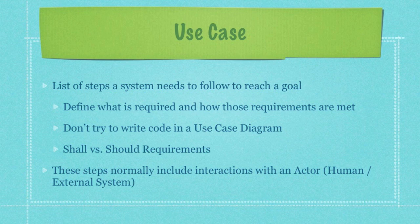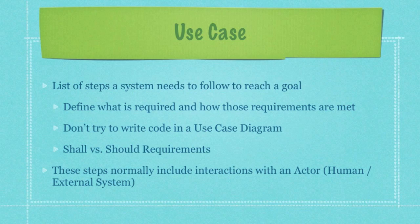That brings us to requirements. You're going to have two types: shall requirements, which are required for a project to be considered complete, and should requirements, which are considered useful but not critical. What you need to do is get the shall requirements done and guaranteed first, then worry about the should requirements if you have time left. Whenever you're creating your use case diagrams, all the steps you list will normally include interactions with actors, which are either human or external systems.